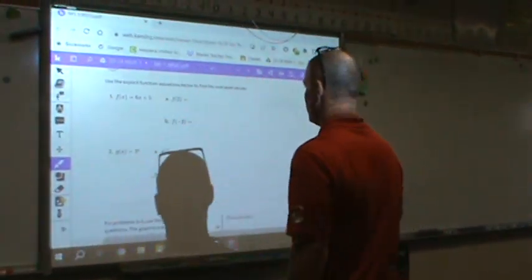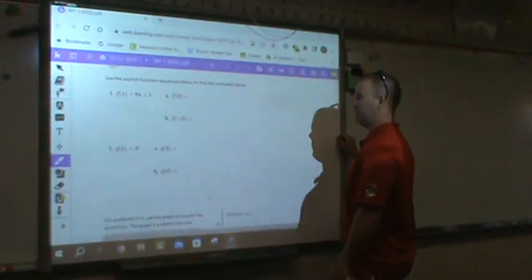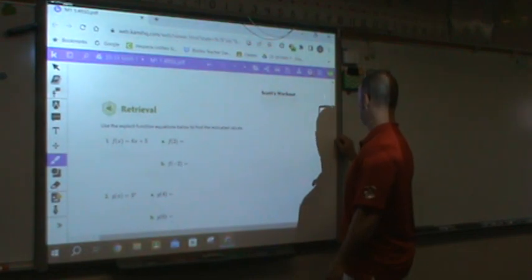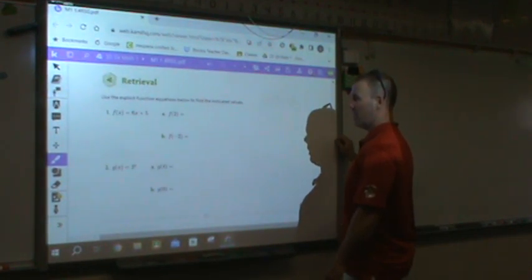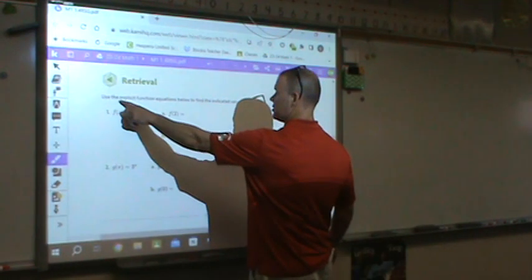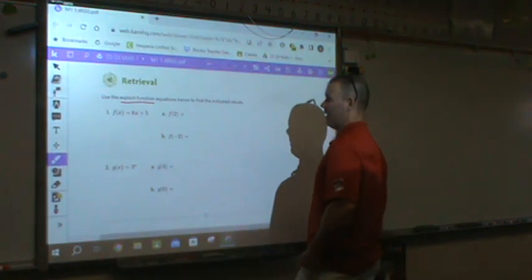All right, here's a quick how-to with the 1.4 ready. We talked a little bit about this Friday, but I'm going to cover this real quick again. Use the explicit function equations below to find the indicated values.